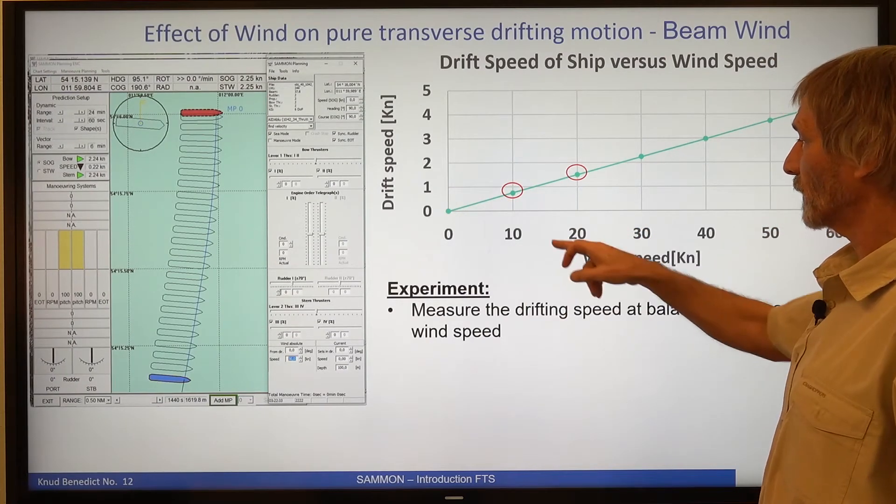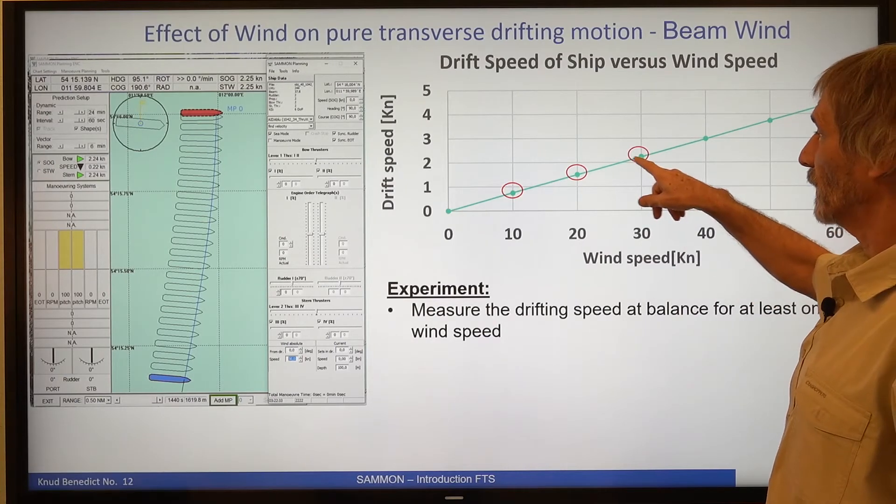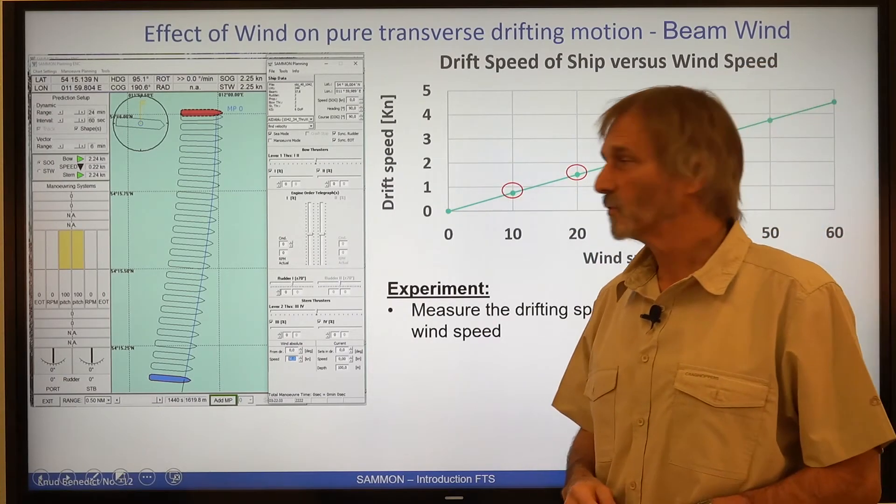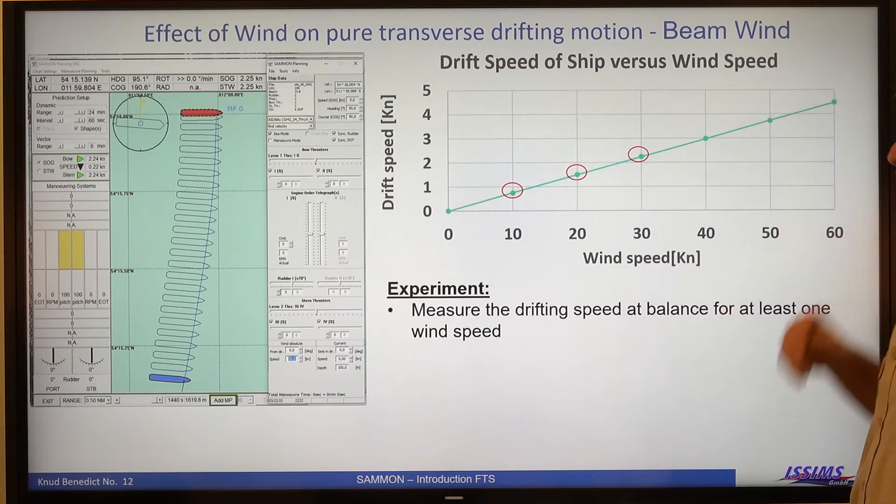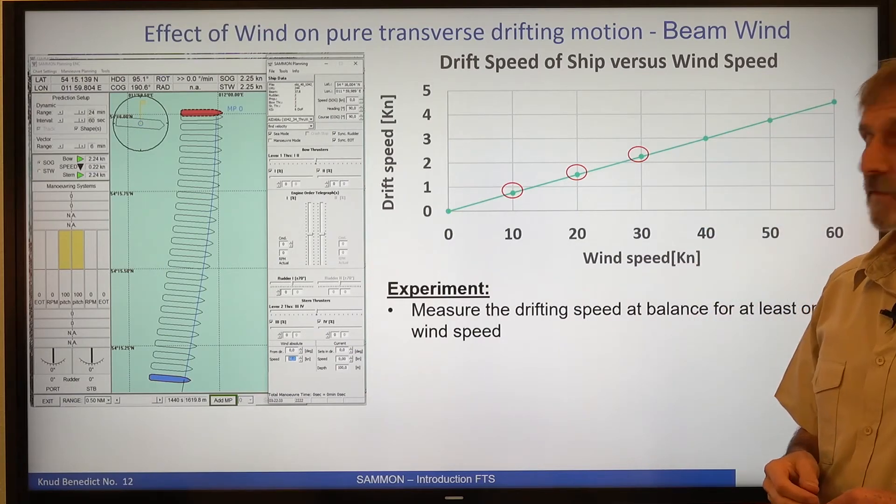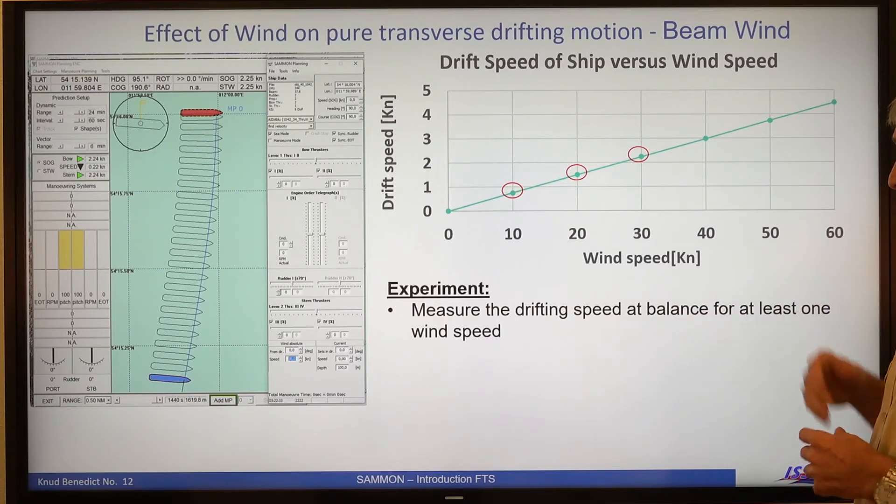And for 30 knots, we arrive here with 2.24. And if we continue, then we would go to these data. So this is the measurement of the drift speed.